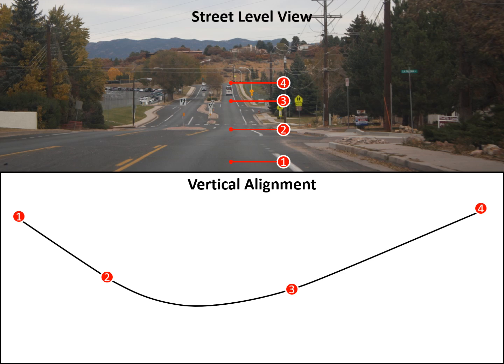Looking at this as an example, we see the top image shows us the street-level view with four points labeled 1, 2, 3, and 4. And on the bottom, we can see the profile view, which shows us the vertical alignment and those same points, 1, 2, 3, and 4. We see that the roadway between 1 and 2 is a tangent section, so a consistent grade, as well as the section from 3 to 4. Our vertical curve occurs from 2 to 3, and this is a sag vertical curve.